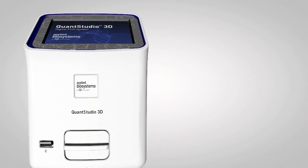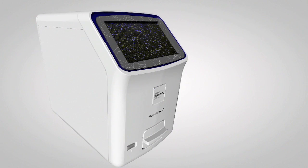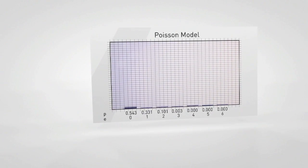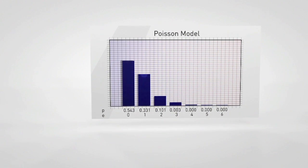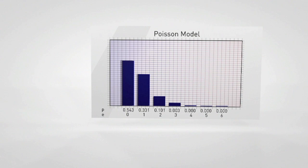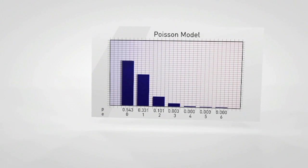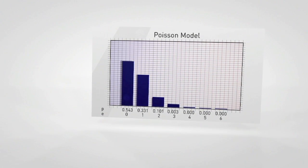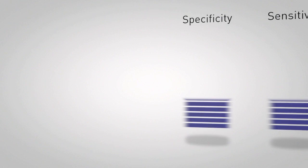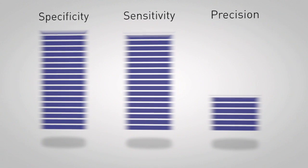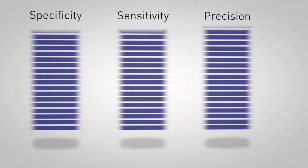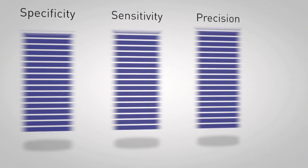Following identification of positive and negative wells, a Poisson model is used to calculate the probability of a given reaction receiving zero, one, two, three, or more copies. This correction factor enables all molecules in the starting sample to be accounted for, yielding absolute quantification. Within absolute quantification are performance attributes that enable applications to go beyond the limits of real-time PCR.